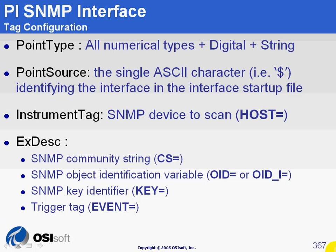We just learned about configuring SNMP tags using our plugin. Let's now take a quick look at what really is inside the tag configuration. In this chapter, we won't necessarily go into all the details of manually configuring SNMP tags. What we really want you to know is where to find the important pieces of information in their configuration. This could be particularly useful when you want to edit tags after you've imported them in Excel.